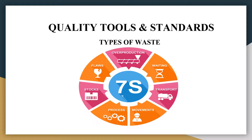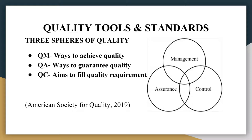The three spheres of quality are quality management, quality assurance, and quality control. Quality management is really the overseeing or ensuring of the consistency in the quality of a good or service. Quality assurance refers to the proactive activities to guarantee the quality of a product or service. Some quality assurance activities can include experimental design, reliability, product testing, and process improvement.